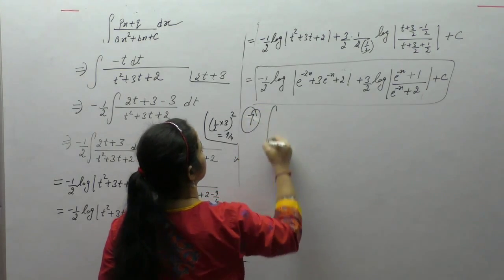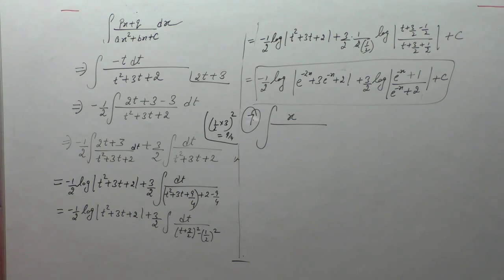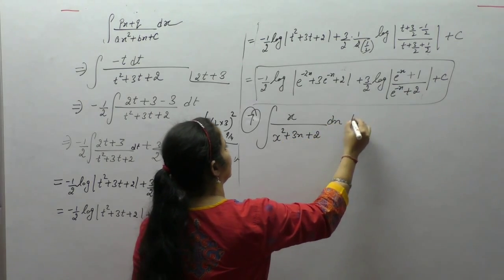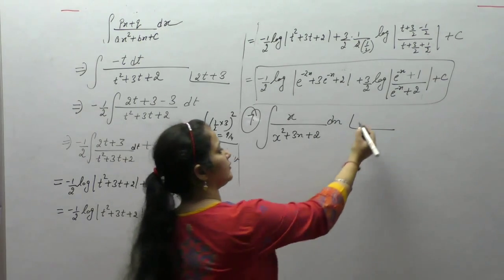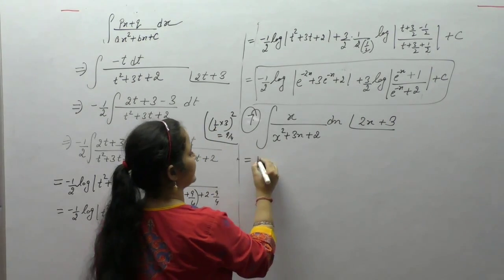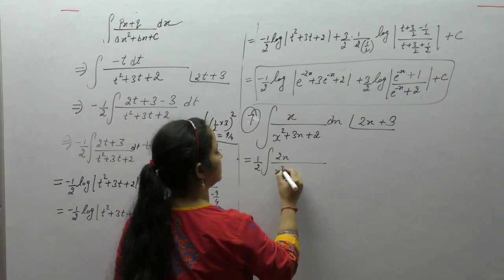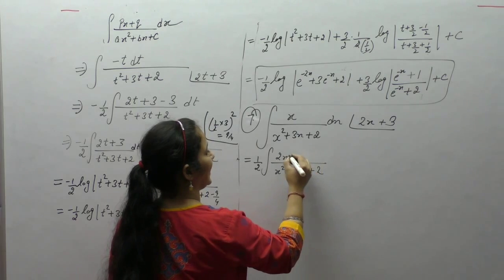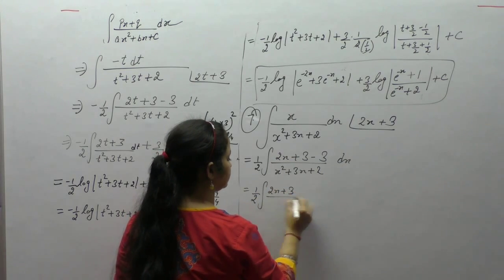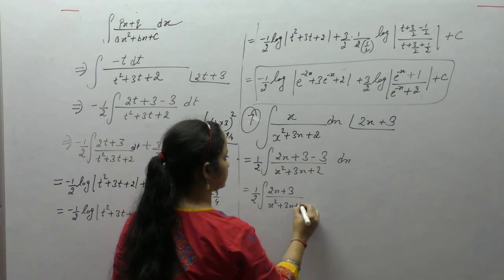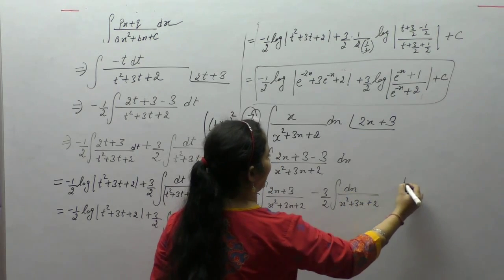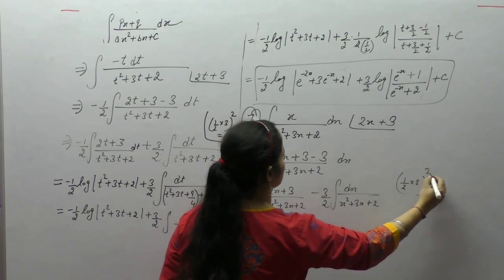Now let's start with question number 7: integral of x upon x squared plus 3x plus 2. Complete the derivative first — derivative of x squared is 2x and derivative of 3x is 3. So we want 2x plus 3 in the numerator. First multiply and divide by 2, then add and subtract 3. Take 2x plus 3 as one term. Then minus 3/2 integral of 1 upon x squared plus 3x plus 2. Add and subtract half the coefficient of x, which is 9/4.